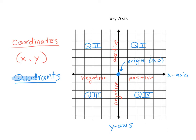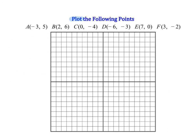Now we're going to start plotting some coordinates. I have a list of coordinates here, A through F, and we're going to place them on the XY axis. When plotting a coordinate, I like to ask myself: should I move left or right, and then should I move up or down? The x value is always along the horizontal line — left or right — and the y value is always along the vertical — up or down.